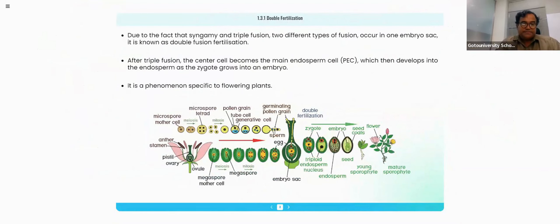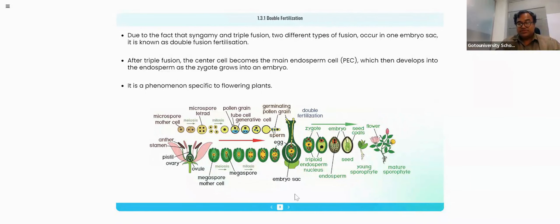Double fertilization is a process where we consider only two different types of fusion in the embryo sac. The primary polar nucleus fusion is not called fertilization. The endosperm is a nourishing structure that enables the zygote to become an embryo.